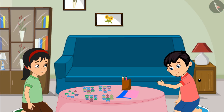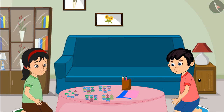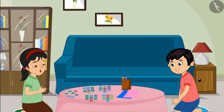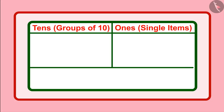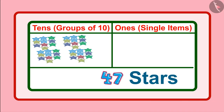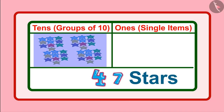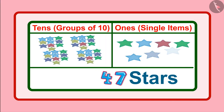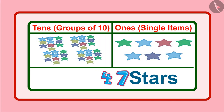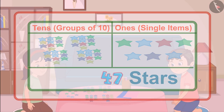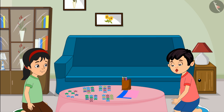Right, Pinky? Yes, Chotu. This means we have 4 groups of 10 and along with this, 7 single units. Now, let us decorate the birthday card with the help of these stars.